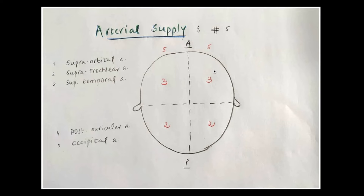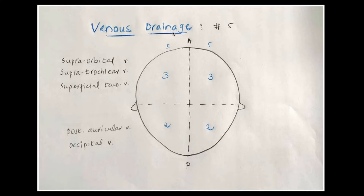Of these five arteries, the first two — supraorbital and supratrochlear — are branches of the internal carotid, and the remaining three are branches of the external carotid. So across the midline of the scalp there is a free anastomosis between branches of the internal carotid and external carotid.